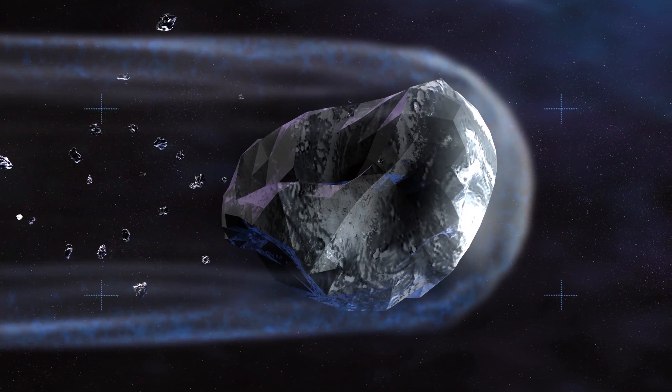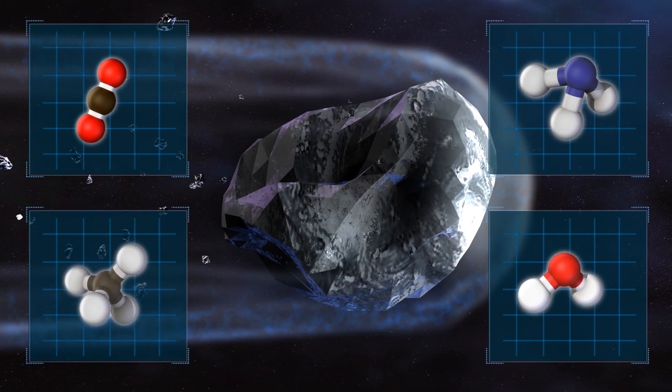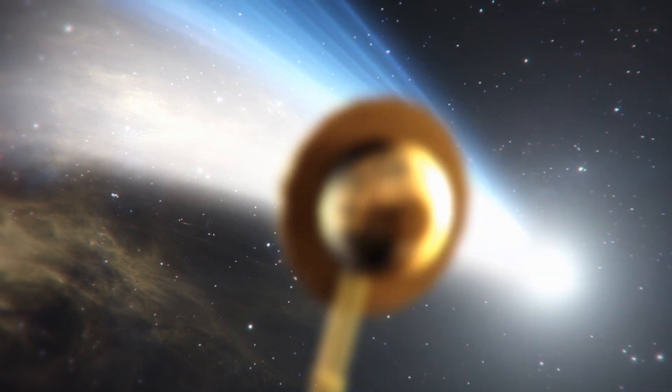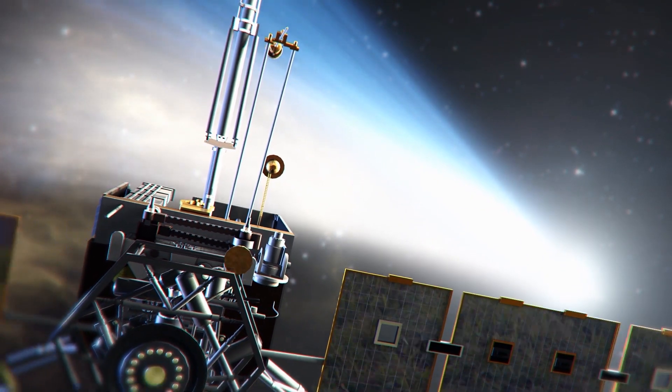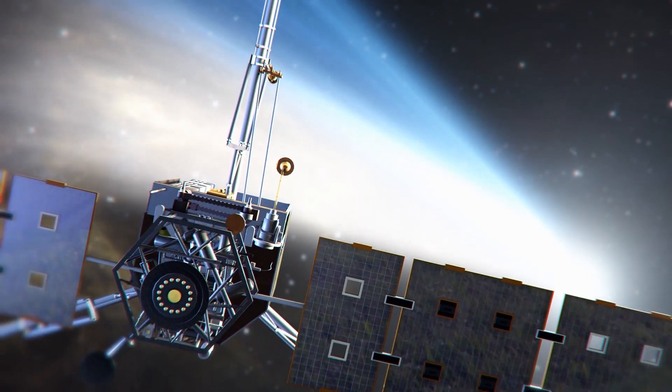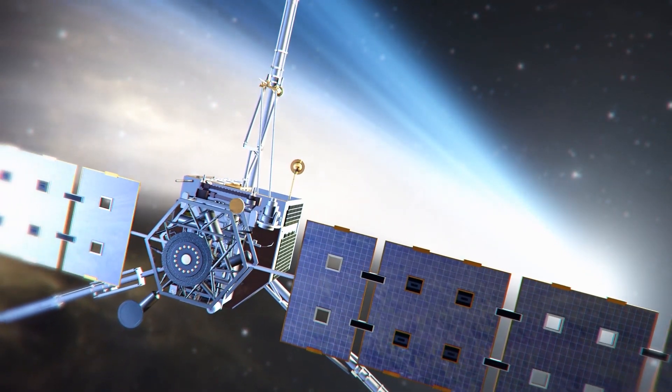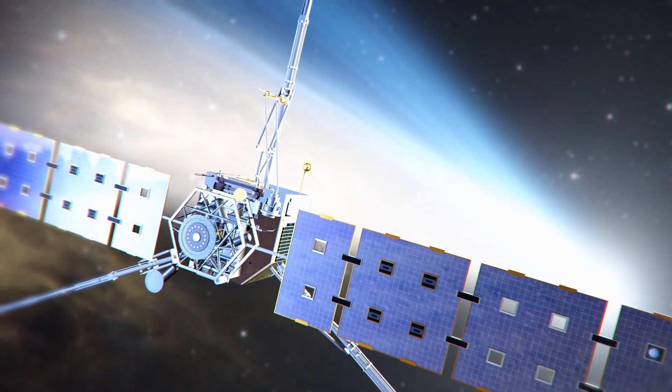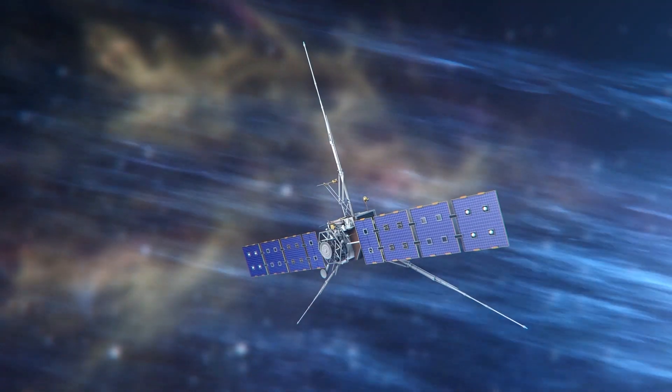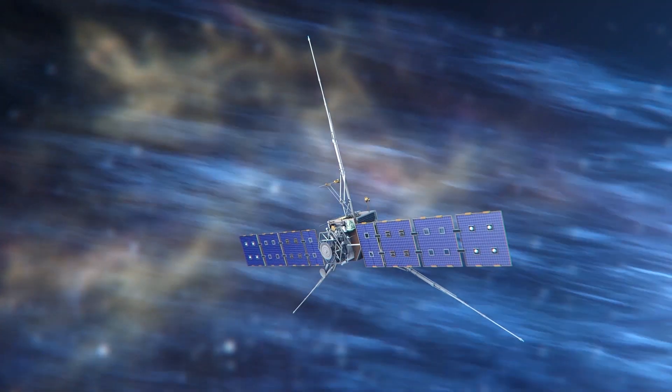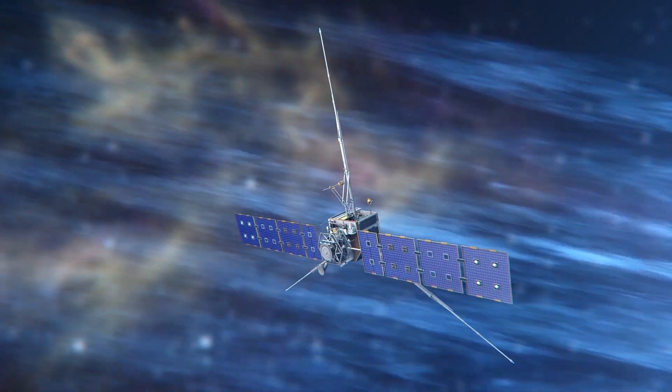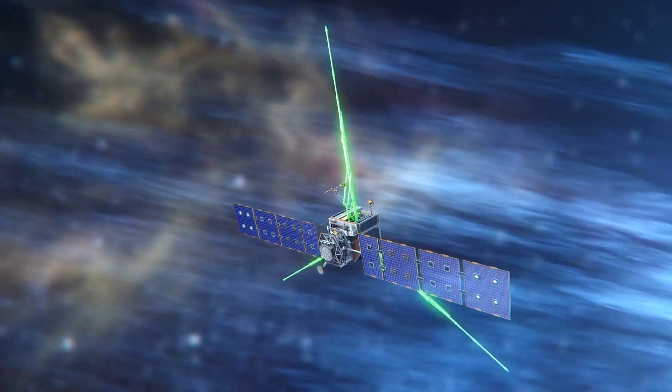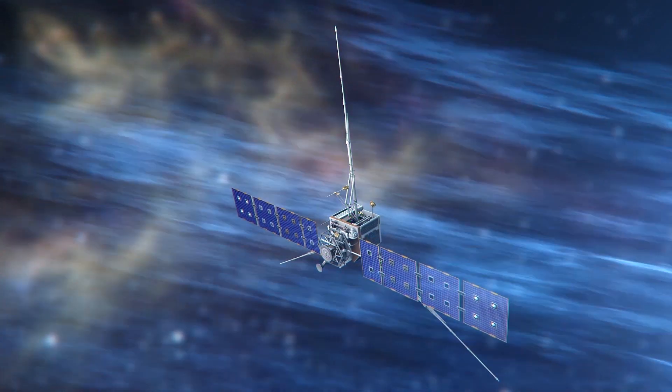Comets are made of dust, frozen water, ammonia, methane, and carbon dioxide. A comet's dust tail is formed by particles that have been blown from the comet by the Sun's radiation. The ion tail is made of charged particles that are pushed away from the Sun by the solar wind. The ESA's solar orbiter was to take readings from the ion tail using its solar wind plasma analyzer. It will analyze particles from the dust tail using its radio and plasma waves instruments.